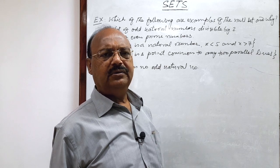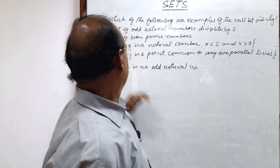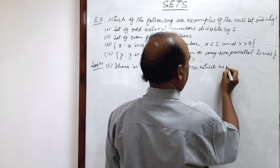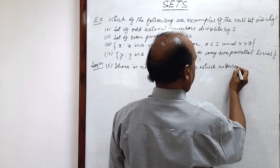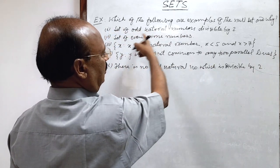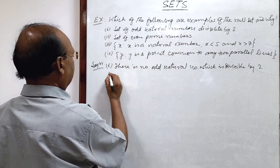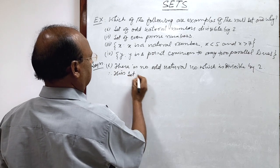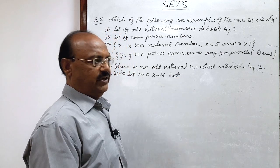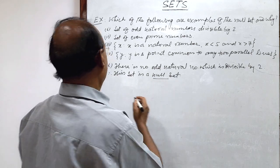If it is divisible by 2, then it will be even, but it is odd, it means not divisible by 2. So there is no odd natural number which is divisible by 2. So this set of odd natural number divisible by 2 is a null set. Therefore, this set is a null set, because there is no element of this set, no member of this set. So this set will be a null set.